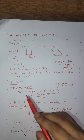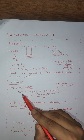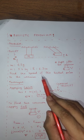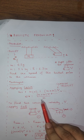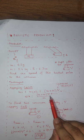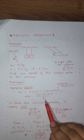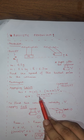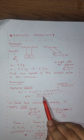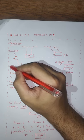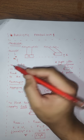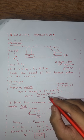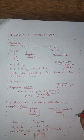From this equation we can solve for small v, the speed of the bullet. Small v equals small m plus capital M times the common velocity capital V, divided by small m. We do have the values of the masses, but this common velocity capital V is something we do not yet have.